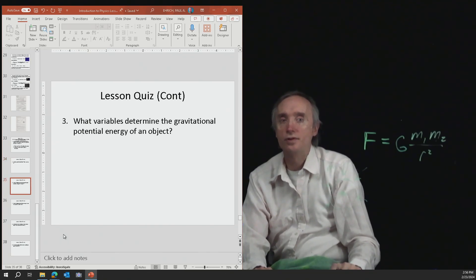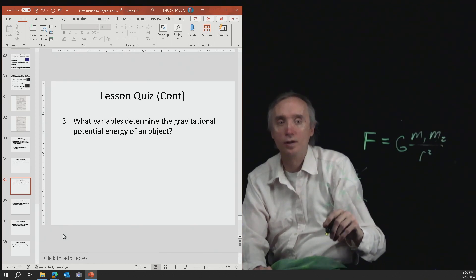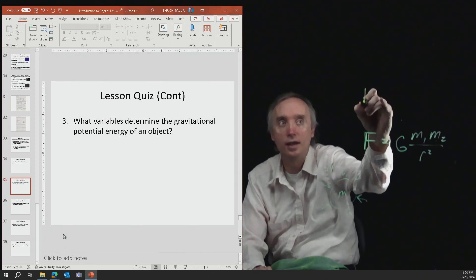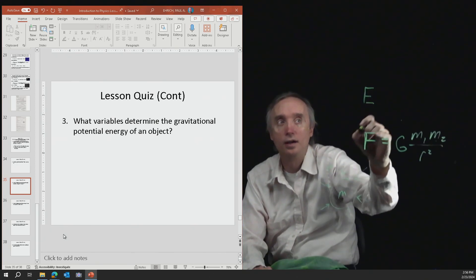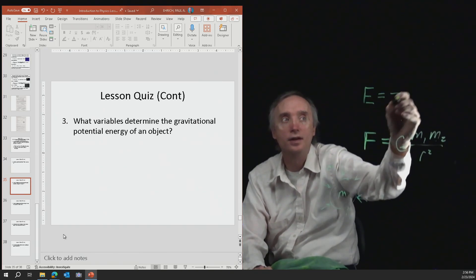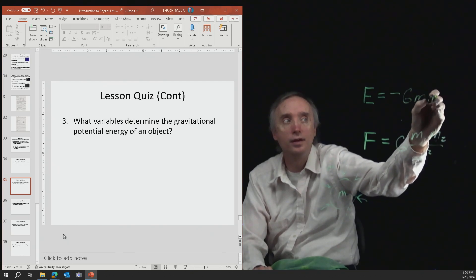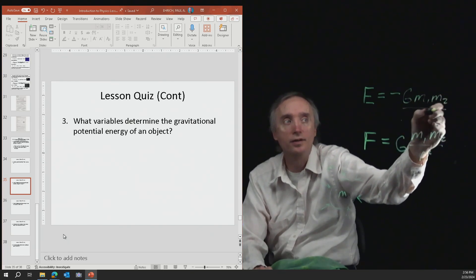What variables determine the gravitational potential energy of an object? Okay, so this was the one where it was the energy E is going to be equal to minus and then it was big G M1 M2 divided by R, not R squared.